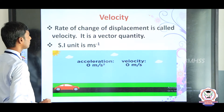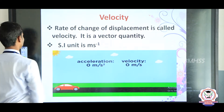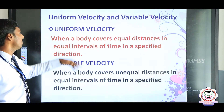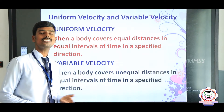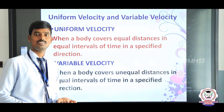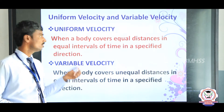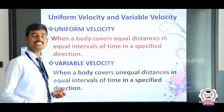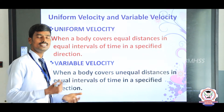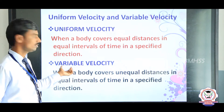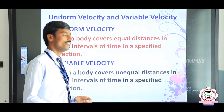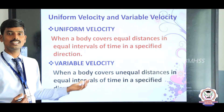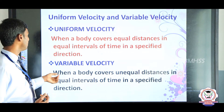Next are uniform velocity and variable velocity. Uniform velocity: when a body covers equal distance in equal intervals of time — this is called uniform velocity. Variable velocity: when a body covers unequal distance in equal intervals of time — this is called variable velocity.